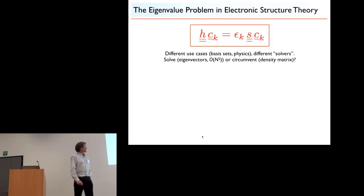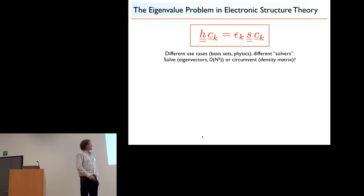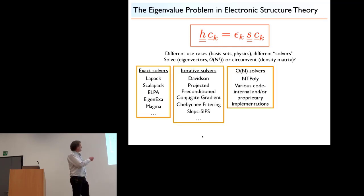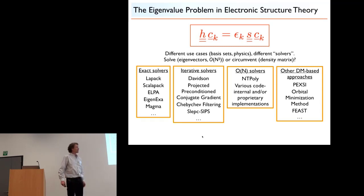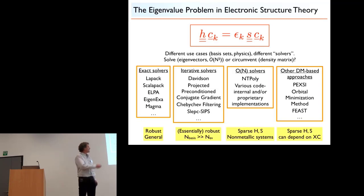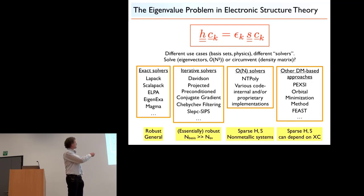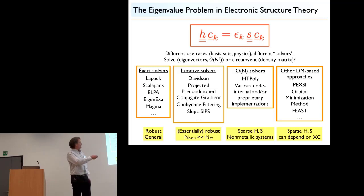Back to the eigenvalue problem: we have different use cases, basis sets, and physics, with many solvers available. You can solve the eigenvalue problem order n-cubed, or try to circumvent it and solve for the density matrix — in the best of cases, order n. Solvers like LAPACK, ScaLAPACK, ELPA, EigenExa, or Magma on GPUs are all exact order n-cubed solvers — robust in general but with cubic scaling. Iterative solvers are essentially robust; if you need few eigenvectors they're competitive, but if you need many they are not. Some like Davidson still call an order n-cubed eigensolver internally.